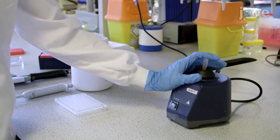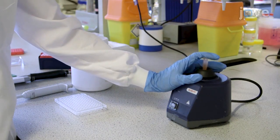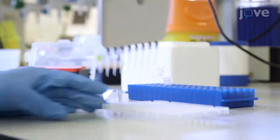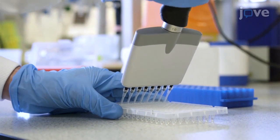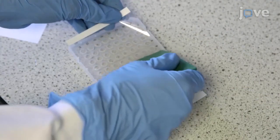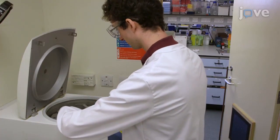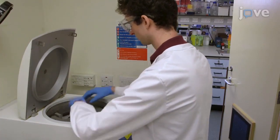Mix either by inversion or brief vortexing. Now, transfer 10 microliters of the protein solution into each well of the 96-well plate. Seal and centrifuge the 96-well plate for 2 minutes at 600 times G to ensure the protein sample and screen component are mixed.